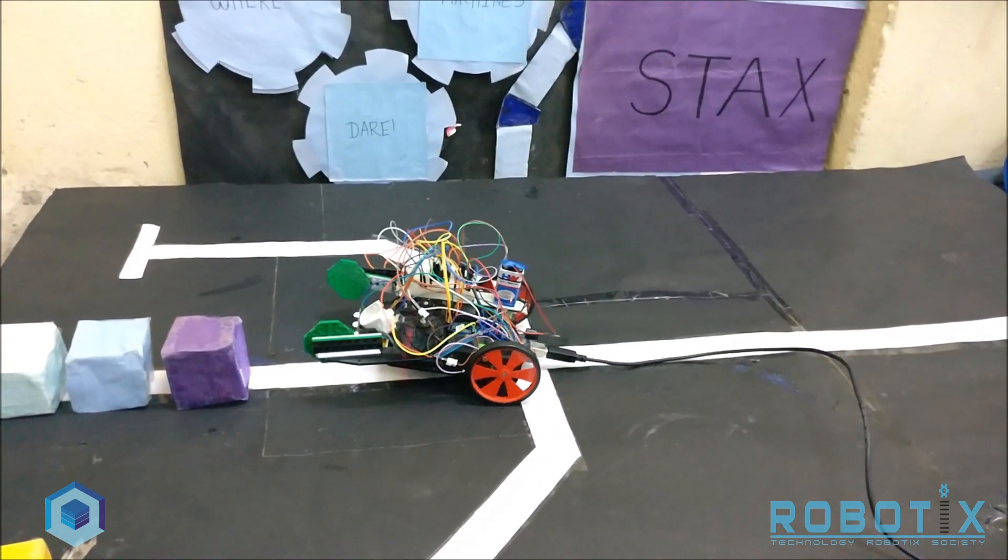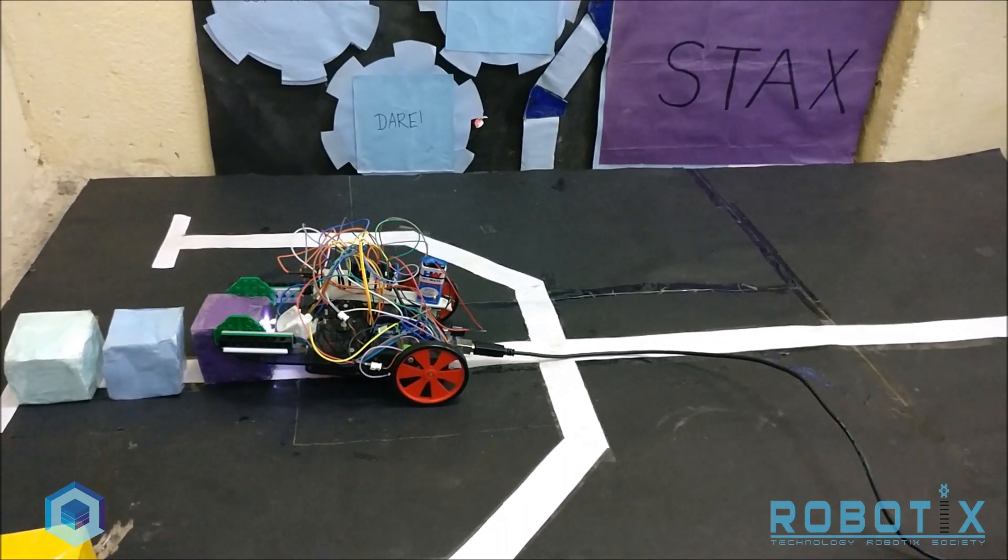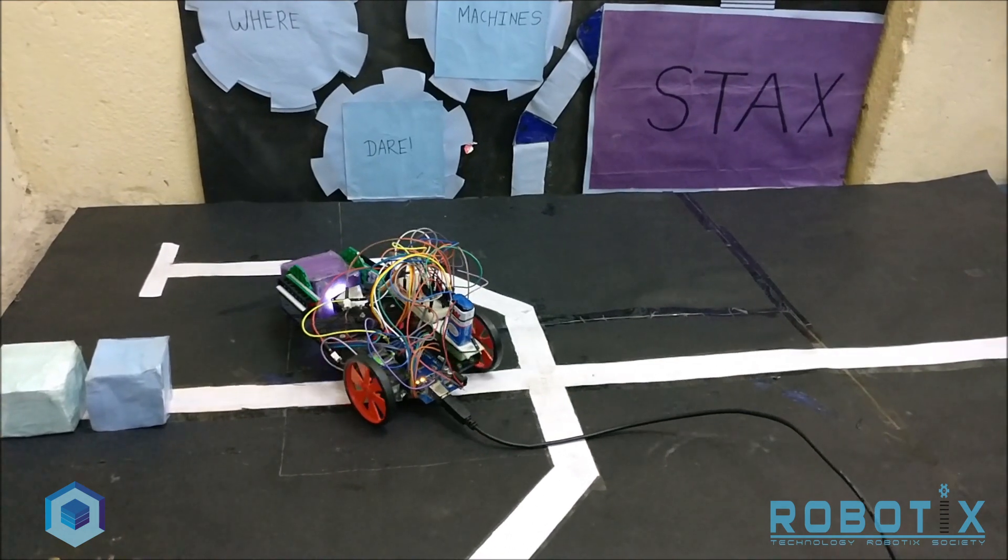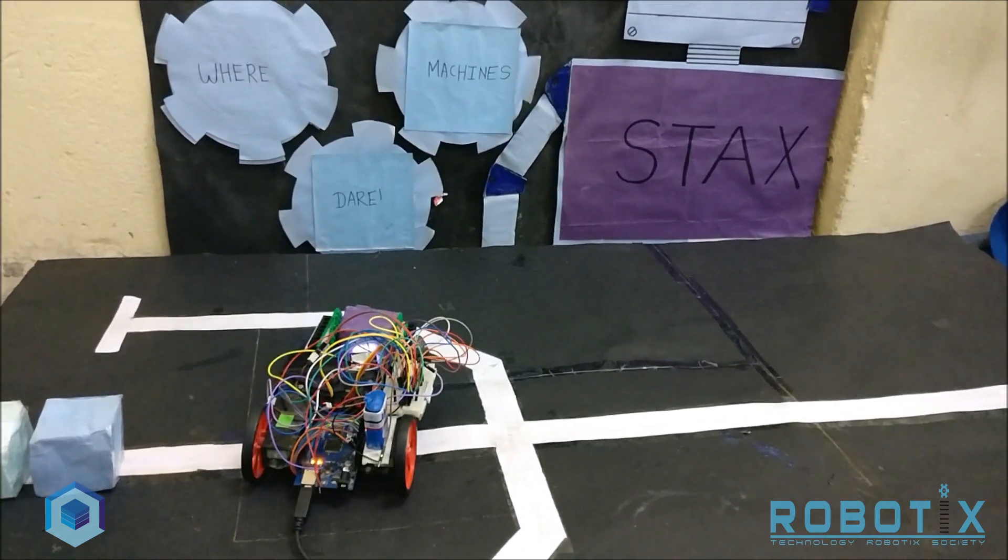This bot is a line follower bot programmed for node traversal and color detection. The color detector here is visible in the form of a bright white LED. The bot detects the color of the block and activates the grippers to pick it up.